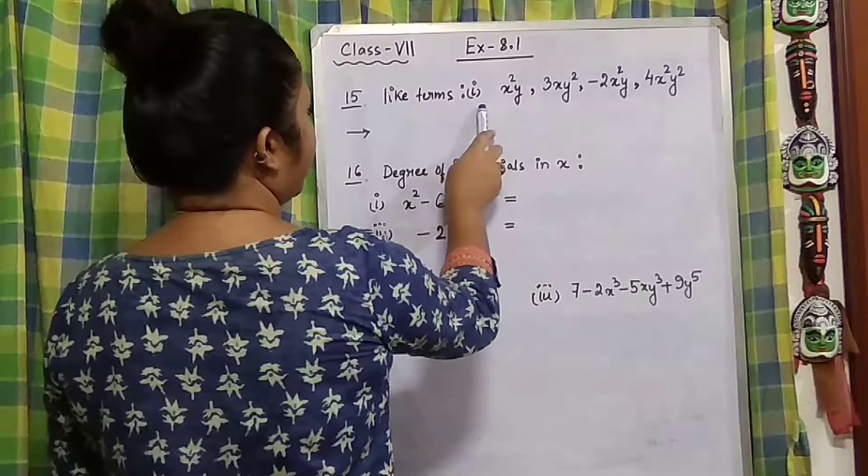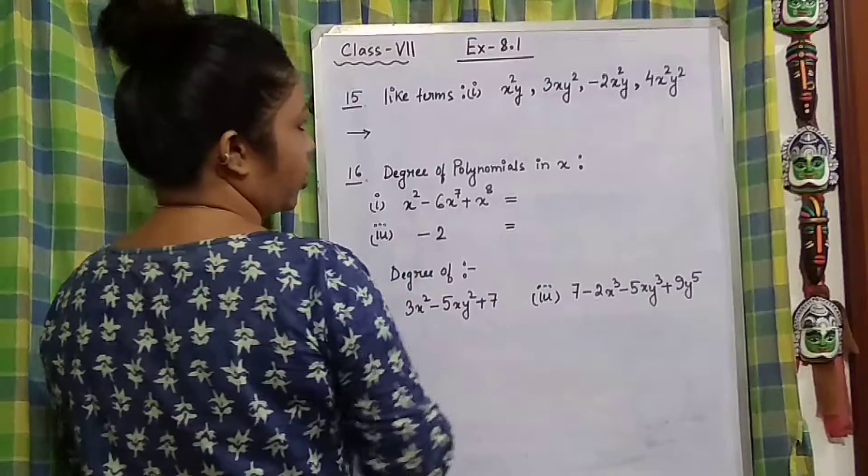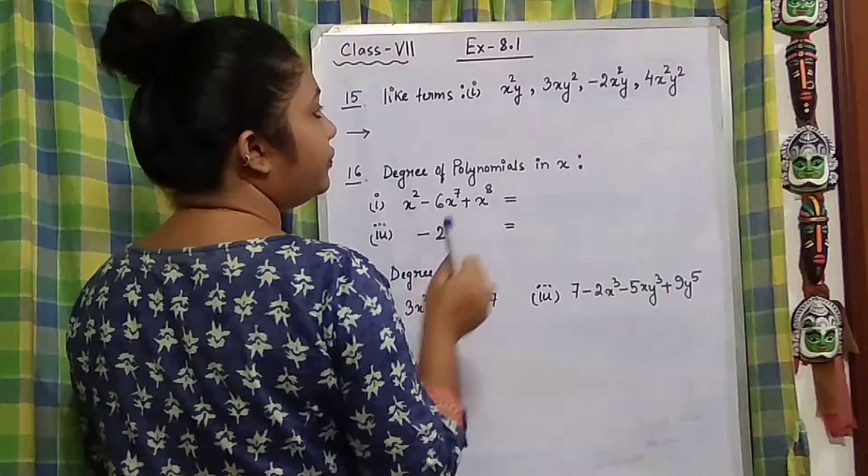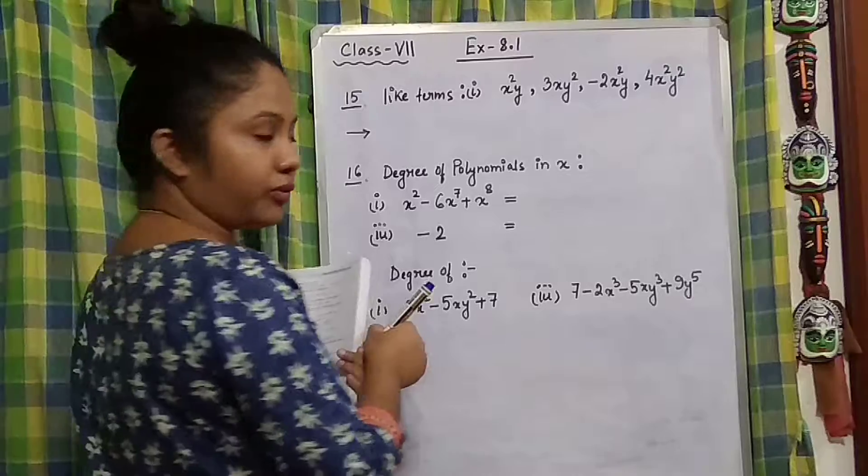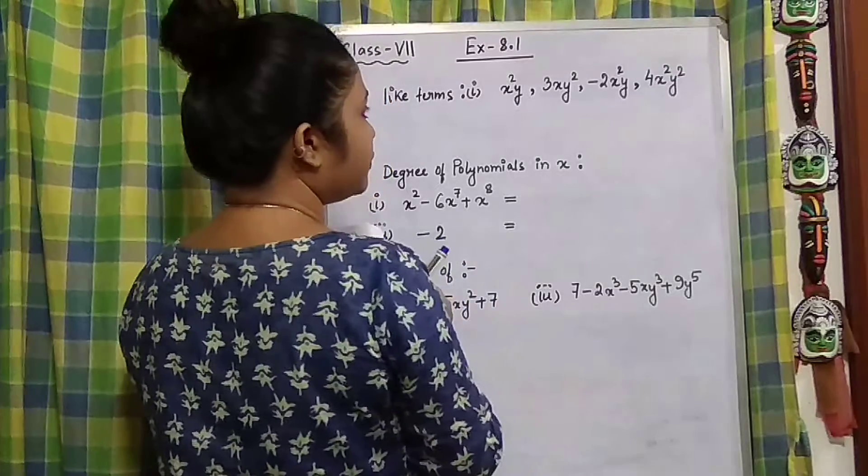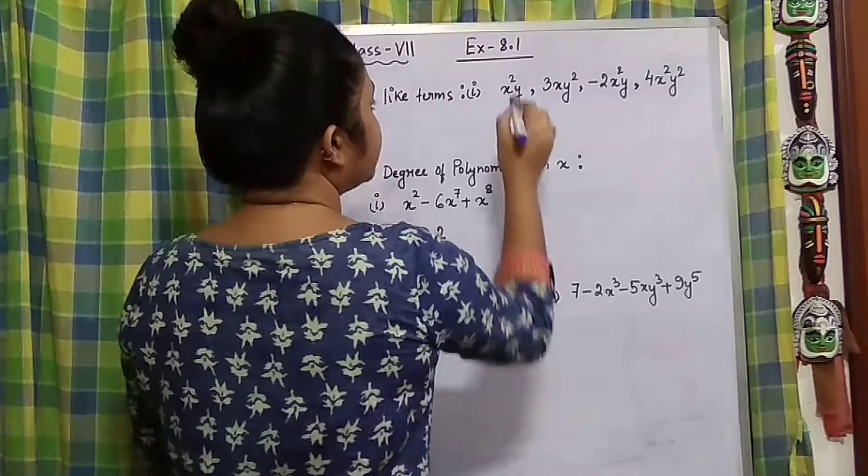In this problem, we have to find the like terms. There are 4 terms given. We know what like terms are, right? Those are terms which are alike to each other. So look at this.